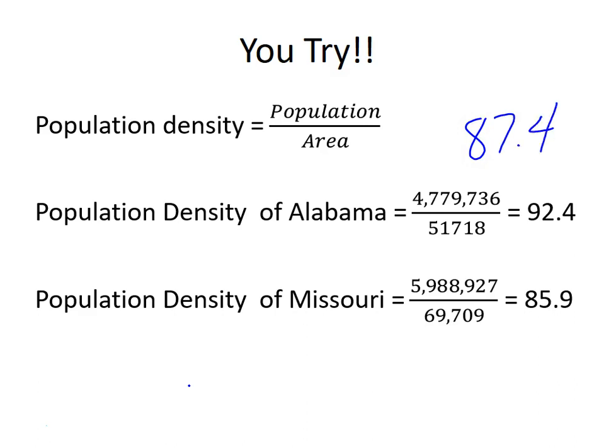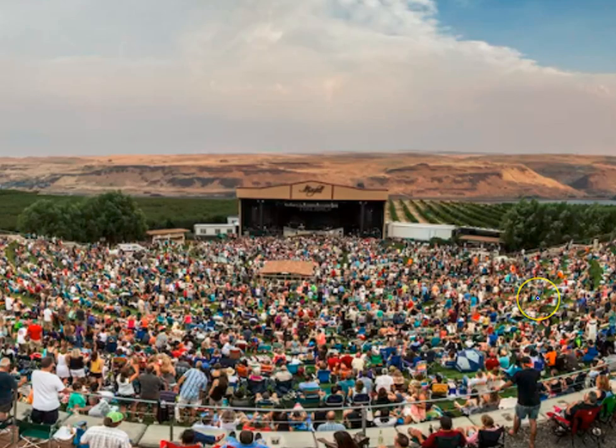Reading through the answer choices: A says Alabama is less than average and Missouri is greater — neither is true, so cross out A. B says both states are less than average — not true since Alabama was higher than 87.4, so cross out B. C says Alabama is greater than average and Missouri is less — that is correct, circle C. D says both are greater — not true since Missouri is below the national average. The answer is C, and this shows how to eliminate answers systematically.